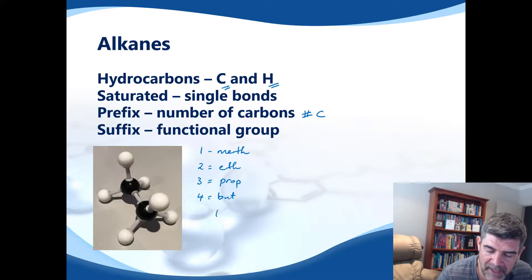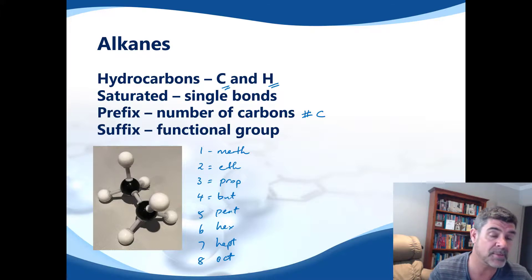Then we have pent, hex, het, and oct, which are probably prefixes you're a little bit more familiar with. That's for five, six, seven, and eight. We're only expected at this point to go up to eight carbons in length, so that should be the maximum size we need to deal with.